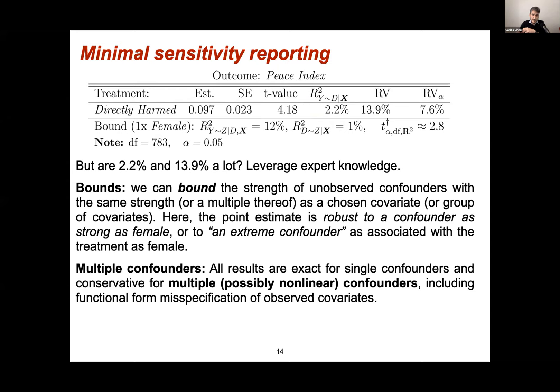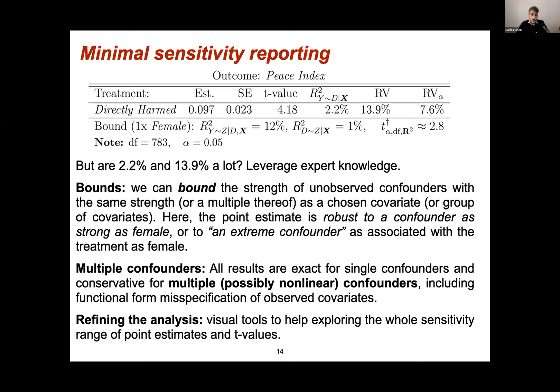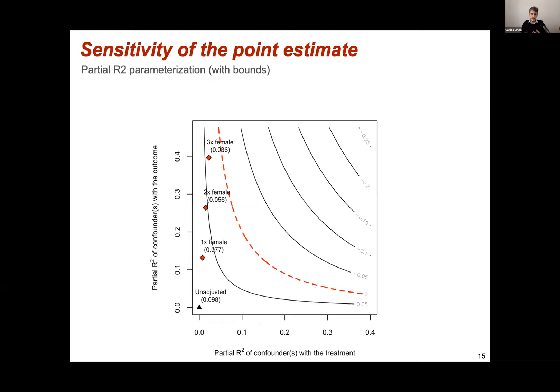These results are exact for single confounders — they are just algebra of OLS — and conservative for multiple, possibly nonlinear confounders. We can use the same quantities to reason about multiple confounders: if a group of confounders explains that much residual variation, that is the worst bias they could cause. The minimal sensitivity reporting already answers most of the questions we posed, but we can further refine the analysis with visual tools exploring the full sensitivity range of point estimates and t-values.